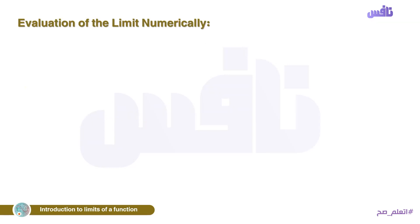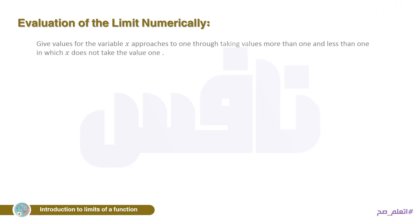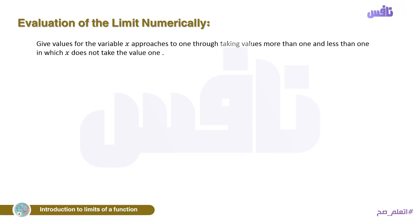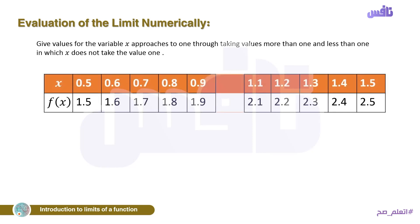The first method is evaluation of the limit numerically. We give values for the variable x approaching 1 by taking values greater than 1 and less than 1, where x does not actually take the value 1. We take x values: 1.1, 1.2, 1.3, 1.4, 1.5 from one side, and values approaching from below: 0.5, 0.6, 0.7, 0.8, 0.9.